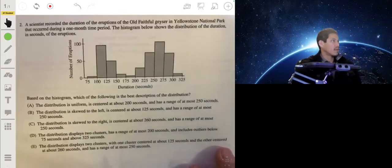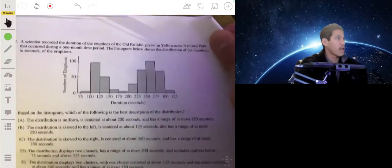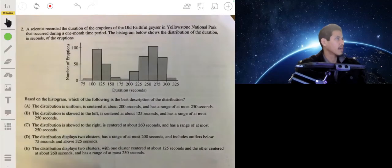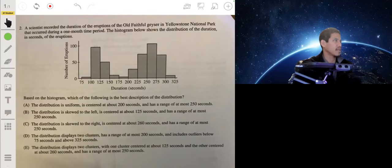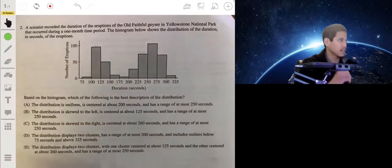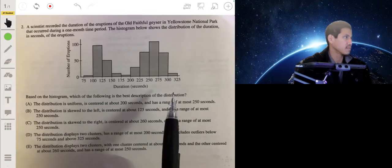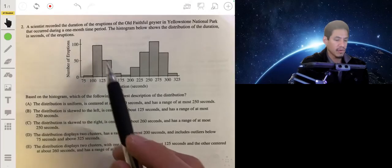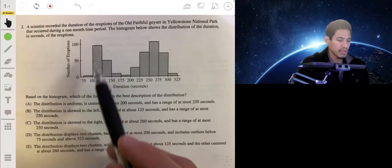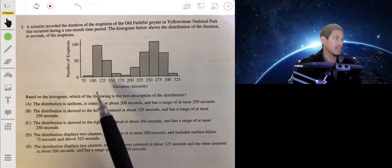Scientists recorded the duration of the eruptions of the Old Faithful Geyser in Yellowstone National Park that occurred during a one-month period. The histogram below shows the distribution of the duration in seconds of the eruptions. Based on the histogram, which of the following is the best description of the distribution? This is definitely not normal. It looks like it'll be double-peaked, twin-peaked, or bimodal, something like this. So let's see what would best work.